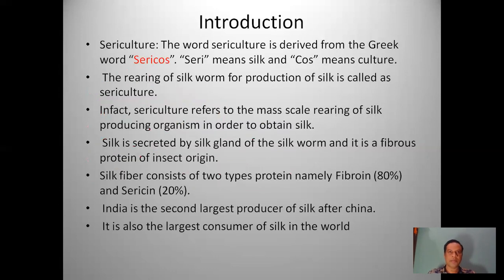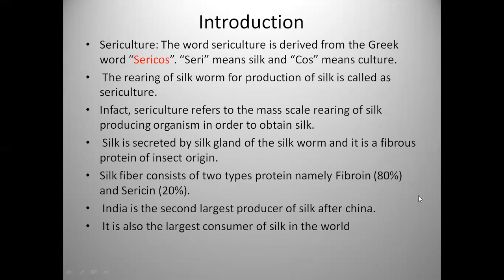Sericulture is a Greek word coming from 'sericose', meaning culture. The rearing of silkworms for the production of silk is called sericulture. In fact, sericulture refers to mass-scale rearing of a silk-producing organism in order to obtain silk. Silk is secreted by the silk gland of the silkworm and is a fibrous protein. Silk fiber consists of two types of protein: fibrin and sericin. India is the second largest producer of silk after China, and also the largest consumer of silk in the world.